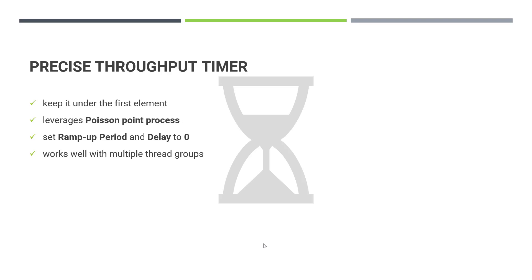Another important point: you have to set the ramp-up period and the delay in the thread group to zero, because the Precise Throughput Timer will take care of simulating the real-world situation using the Poisson point process. There's no need to worry about ramp-up period — sometimes if you set it too high or too low, you will not achieve the total throughput. That is why it is always good to set these two configurations to zero. The rest the Precise Throughput Timer will handle.